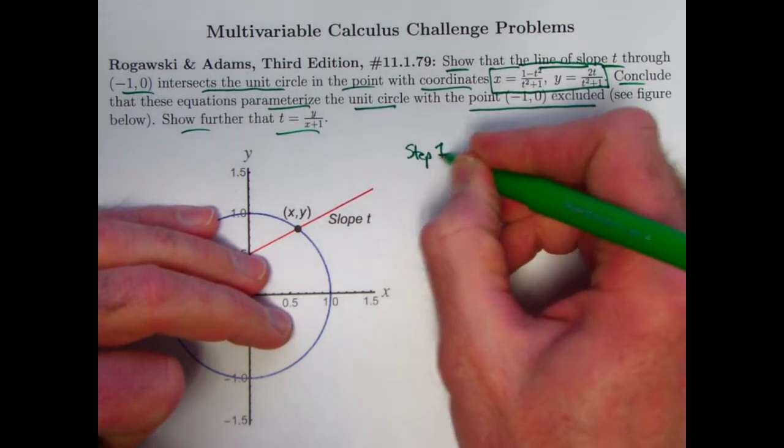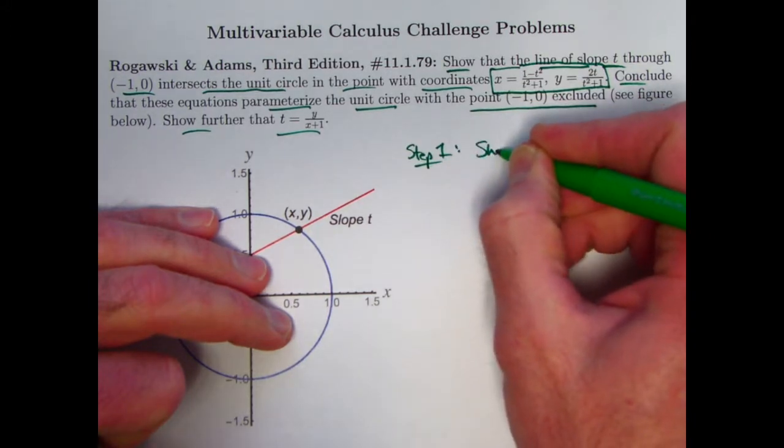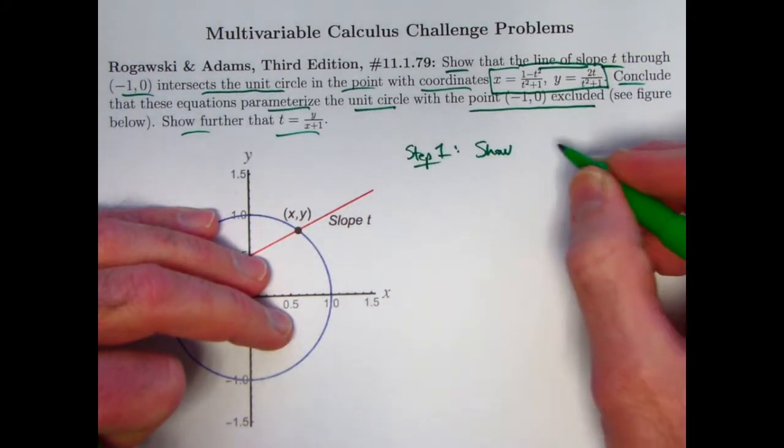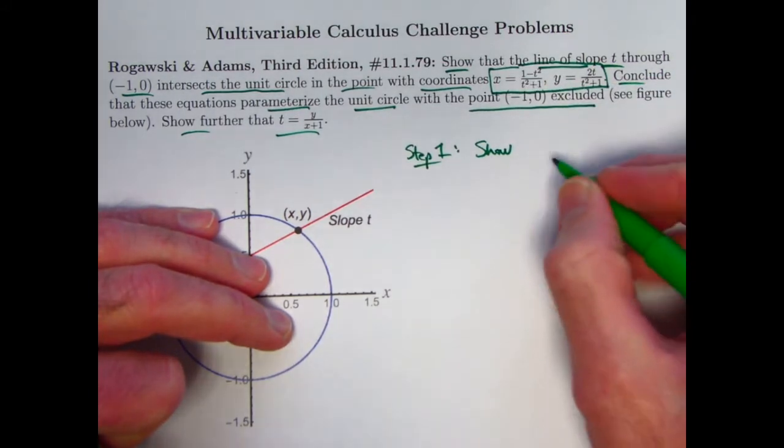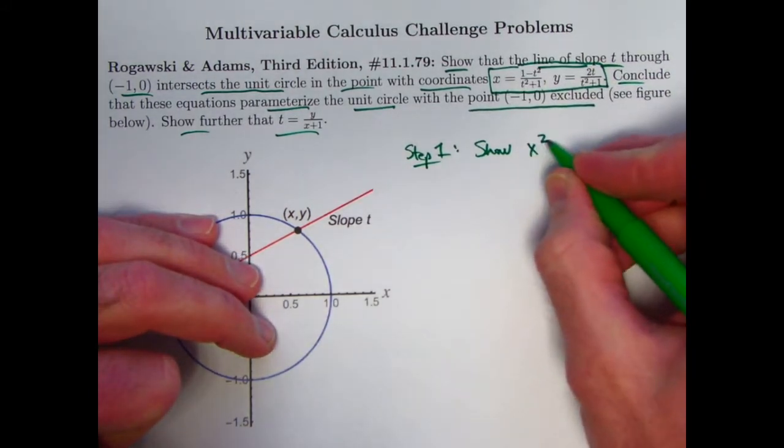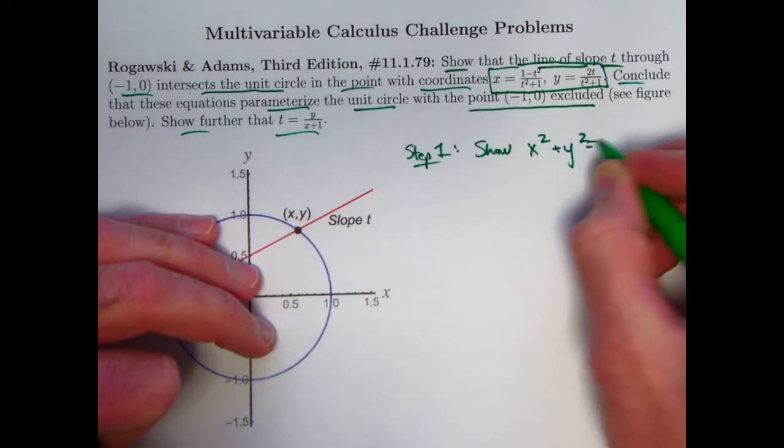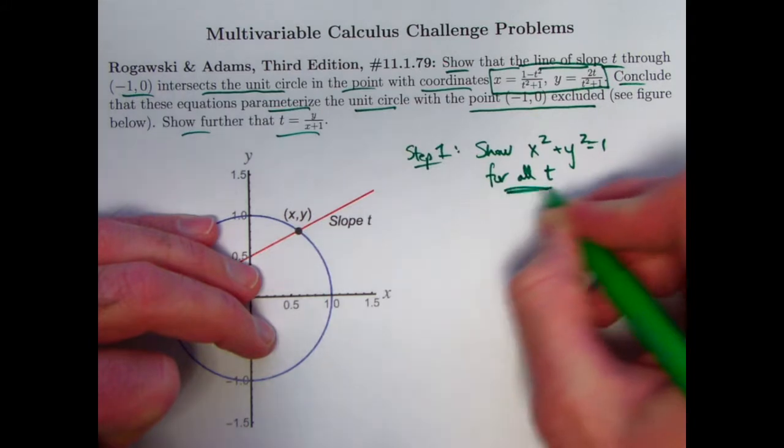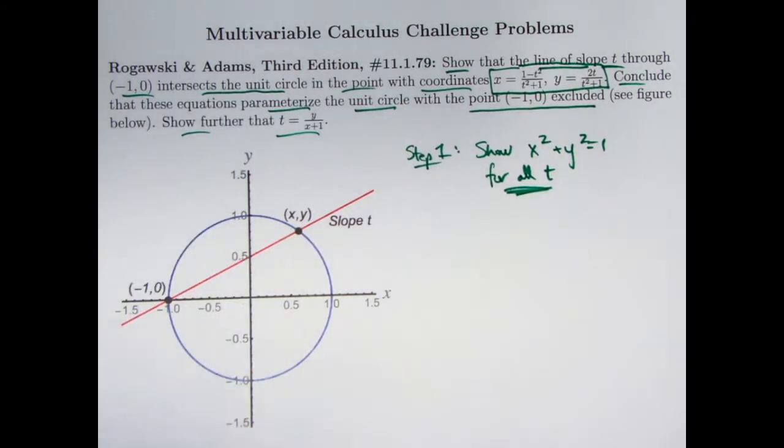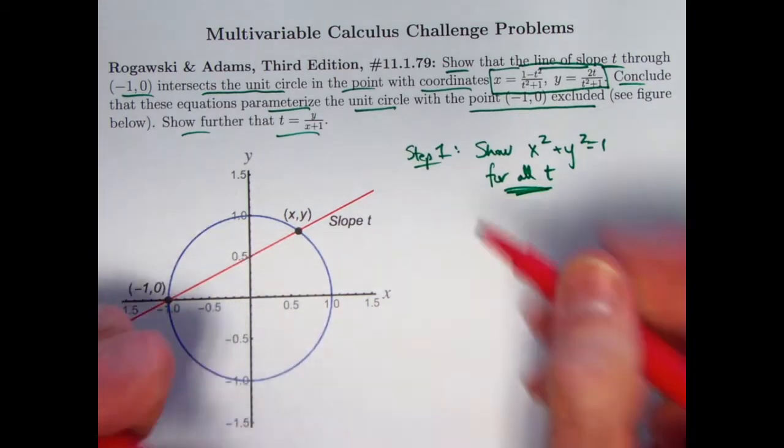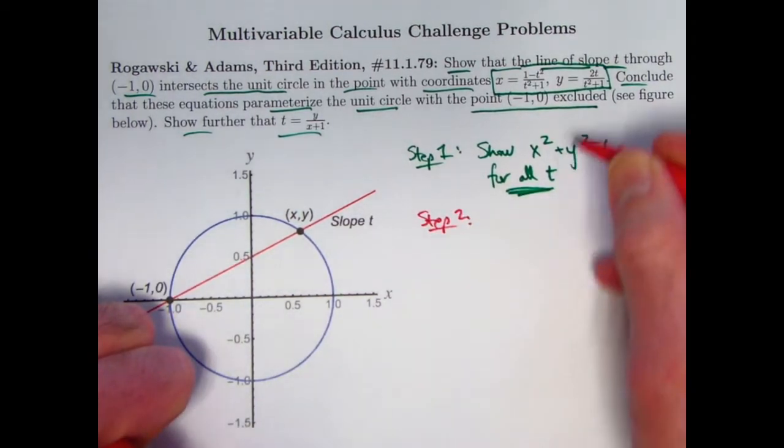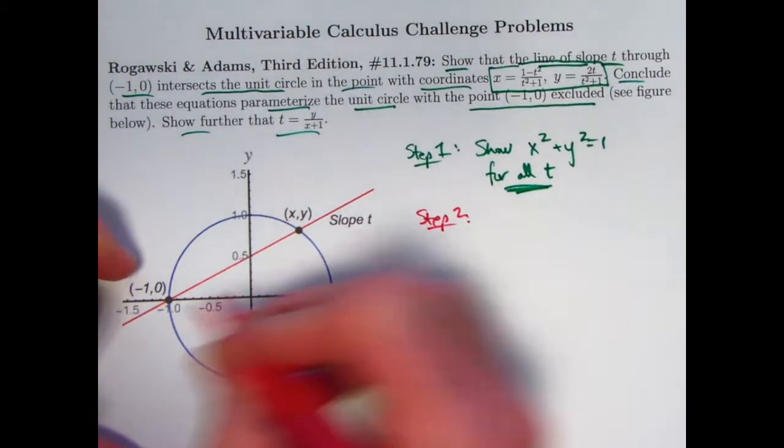That does make the problem easier, and I will solve it based on that assumption. But at the end of the video, if you're interested, I will also talk about how you could derive these equations if you did not know them. So there's really two things to do. Step one is to really show that x and y, based on these equations, satisfy the equation of the unit circle, x² + y² = 1, for all t.